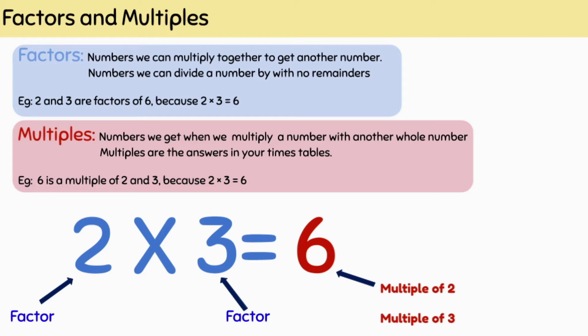Factors are the two numbers we multiply together to give another number. Factors are also the numbers that we use to divide another number by, leaving no remainders.